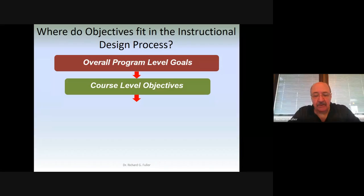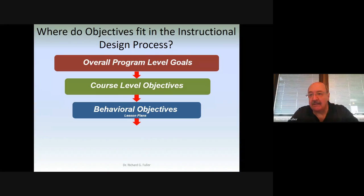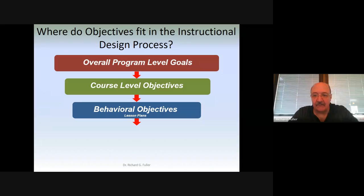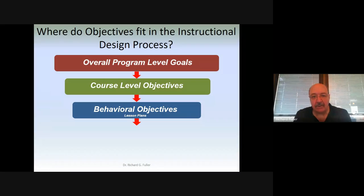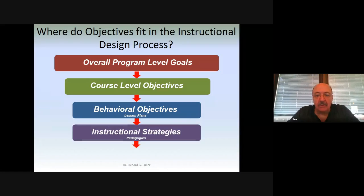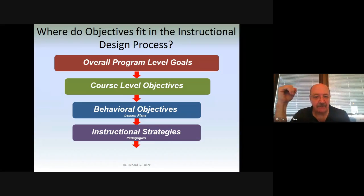After you've established course-level goals, individual instructors break things down into behavioral objectives. If the program-level goals are the 10,000-foot view and course-level objectives are the 5,000-foot view, behavioral objectives are about the 5-foot view — you're right there. Each objective is based upon those course-level objectives, finalizing and bringing them down into structure. These are what will develop your instructional strategies. When you have behavioral objectives, you're getting very, very specific.